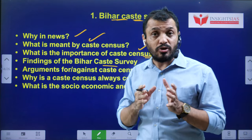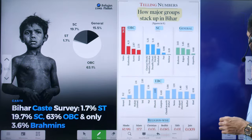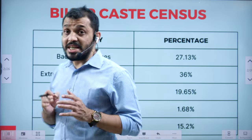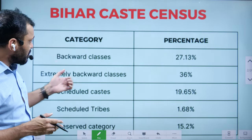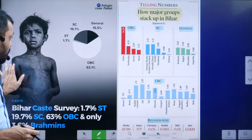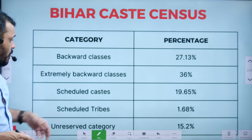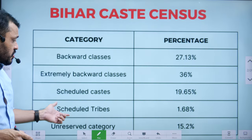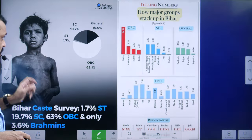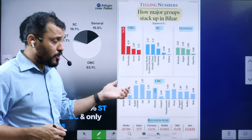Let me first show the data related to the Bihar caste survey — it is a survey, not a census. If you look at the numbers, the total backward class from this survey is around OBC 63.1%, Schedule Caste 19%, Schedule Tribe 1%, and other categories 15.2%.